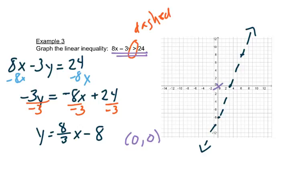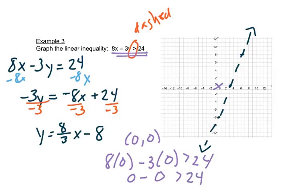So we'll go back to our original problem and we'll put in 0 and we'll see if we get something that is true. 0 times 8 is 0, 3 times 0 is 0. So we're asking ourselves, is 0 bigger than 24? And the answer is no. So remember that if that point doesn't work, nothing on that side works, and we want to shade the other side.